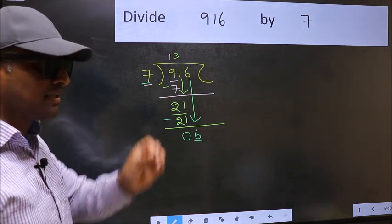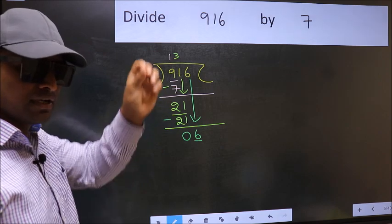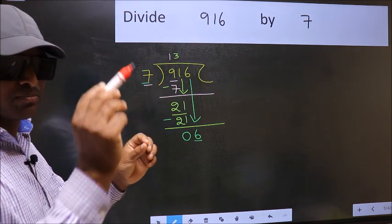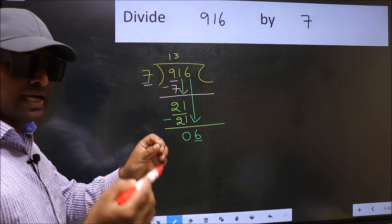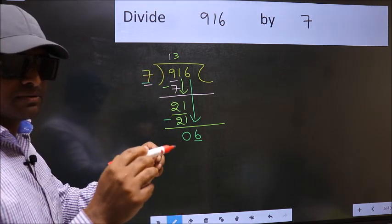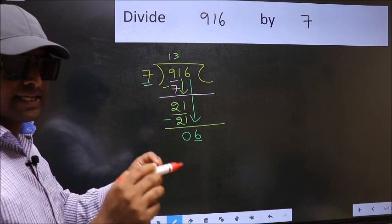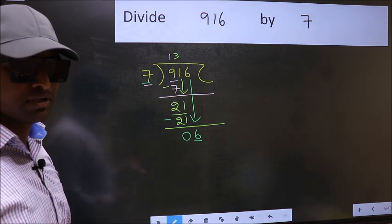I repeat: bringing the number down and also putting dot take 0—both at the same step—you should not do.